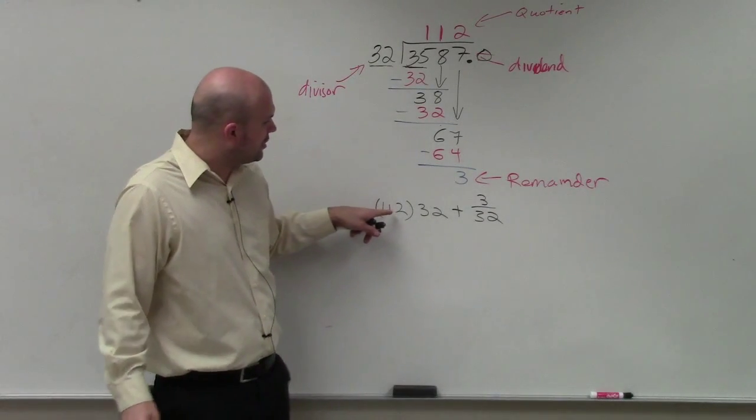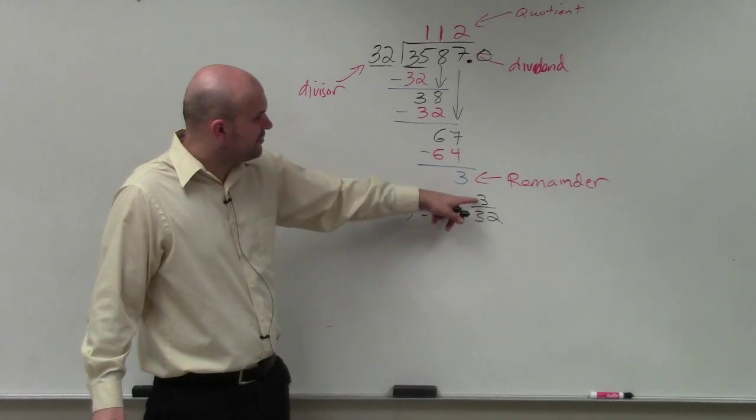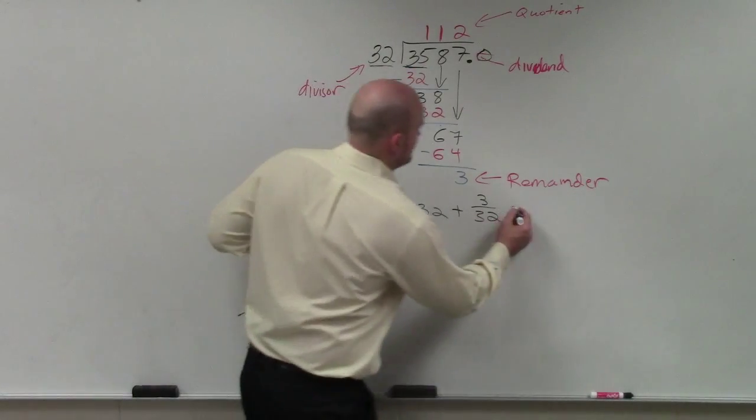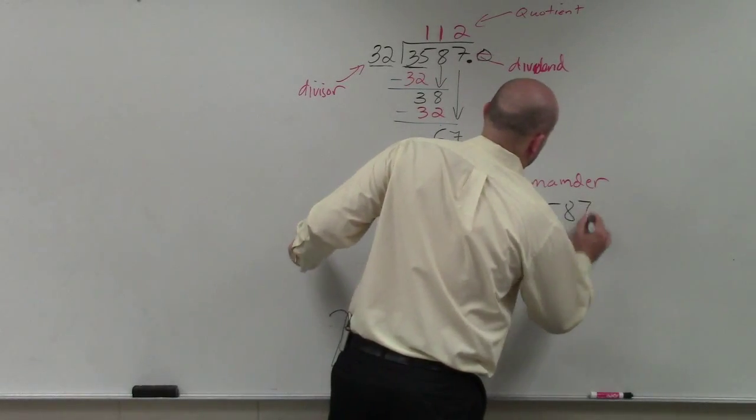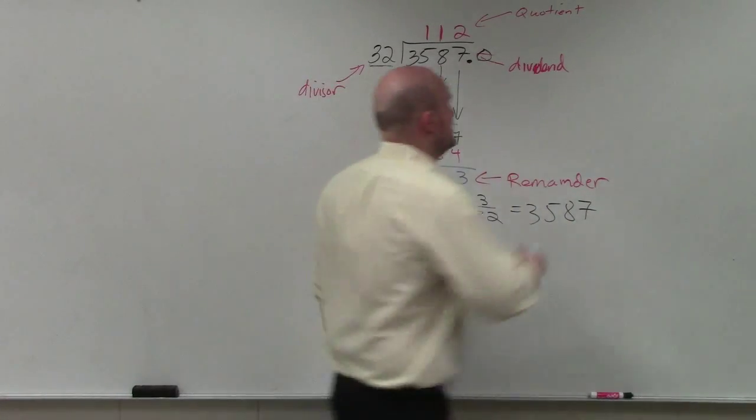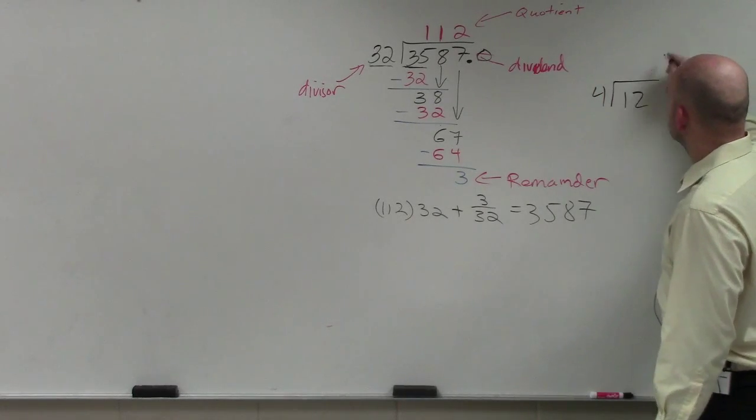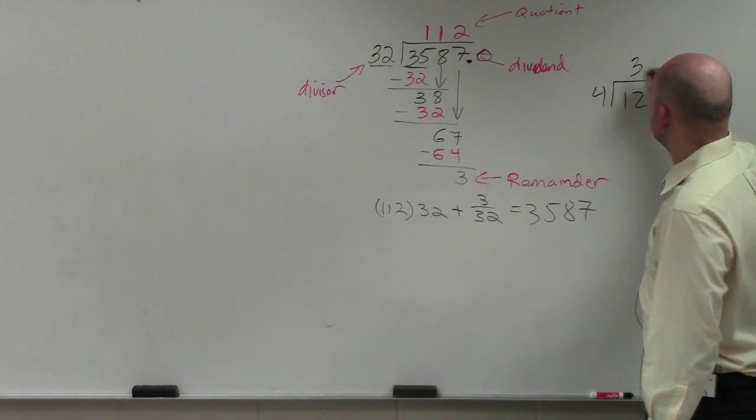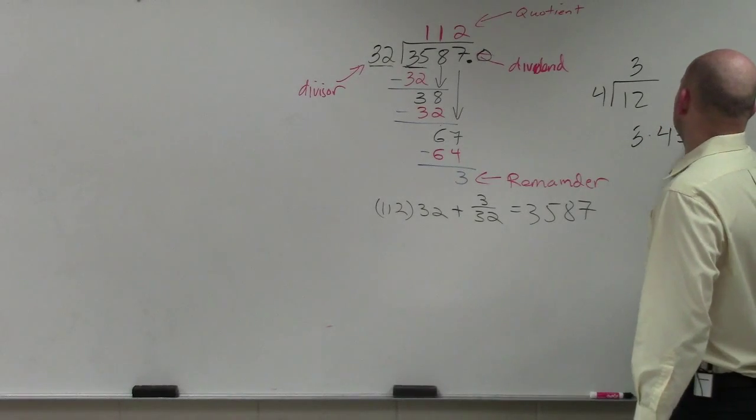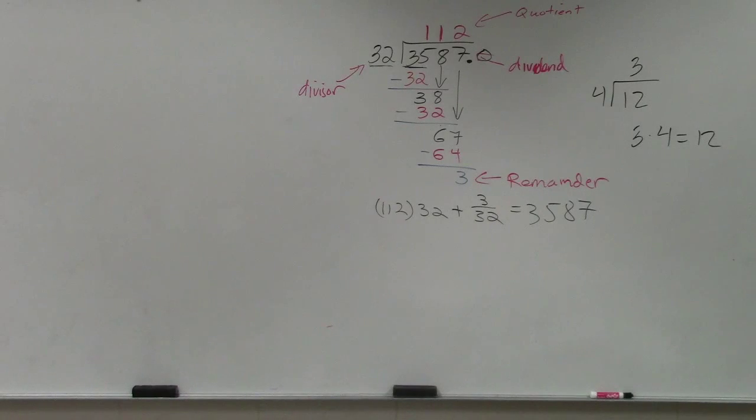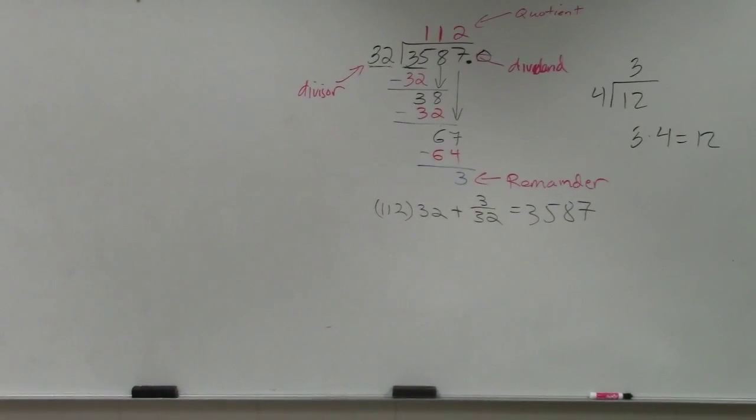But do you guys agree with me? 112 times 32 plus the remainder over your divisor gives you 3587. It's just like me saying 4 divided by 12 goes in there three times, 3 times 4 equals 12. If I was going to rewrite that as a product, you could just do the same thing like that. We'll talk more about that later.